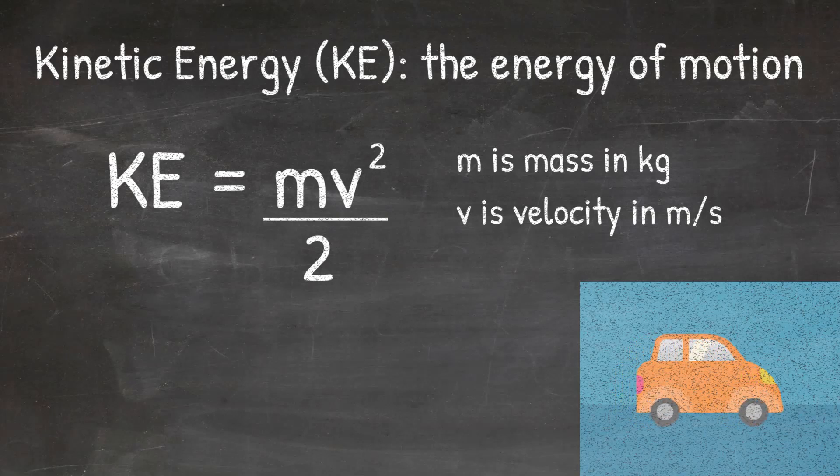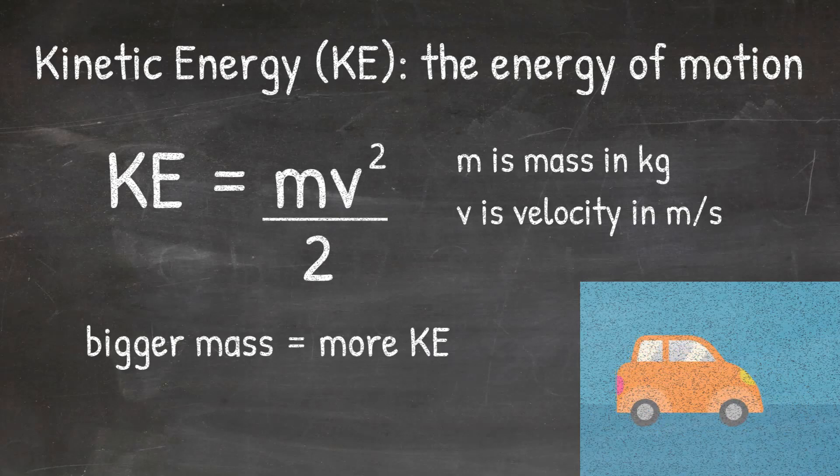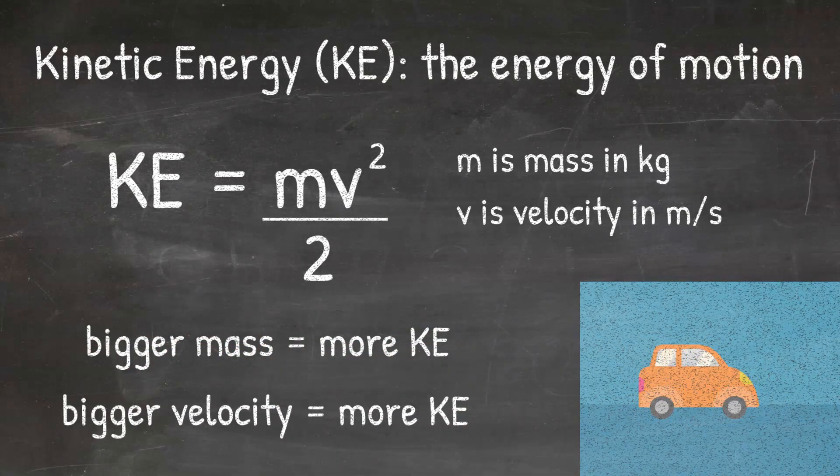But from this formula, we can see that kinetic energy is affected by the mass and the velocity of an object. The bigger the mass, the more kinetic energy an object has, and the bigger the velocity, or the faster the object is moving, the more kinetic energy that object will have.